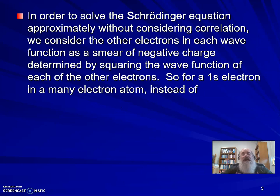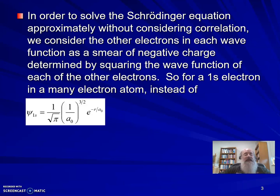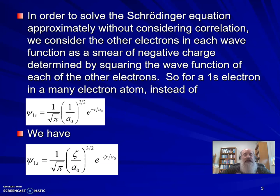So in order to solve the Schrödinger equation approximately without considering correlation, we'll consider the other electrons in each wave function as a smear of negative charge determined by squaring the wave function of each of the other electrons. So for a 1s electron in a many-electron atom, instead of a wave function that looks like this, we get a wave function that looks like this—not very different.